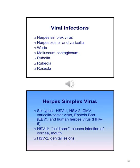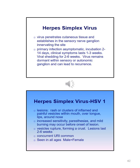Herpes simplex virus is a viral infection. There are six types: HSV-1, HSV-2, CMV, varicella zoster virus, Epstein-Barr, and human herpes virus HHV-6. HSV-1 is commonly called cold sore and usually causes infection of the cornea and mouth. HSV-2 usually has genital lesions. The herpes virus penetrates cutaneous tissue and establishes in the sensory nerve ganglion innervating the site. Primary infection is asymptomatic with incubation of 2–14 days, clinical symptoms lasting 1–3 weeks, and viral shedding for 2–6 weeks.